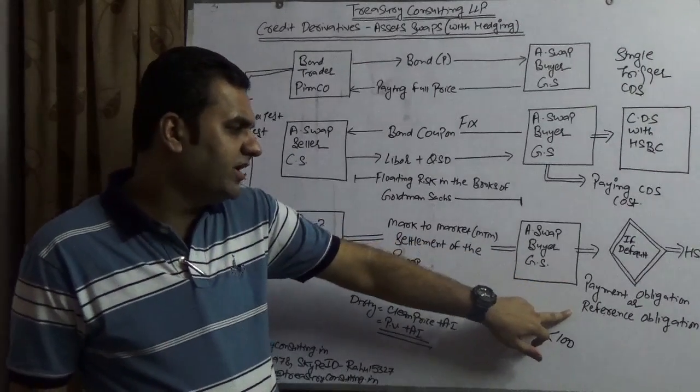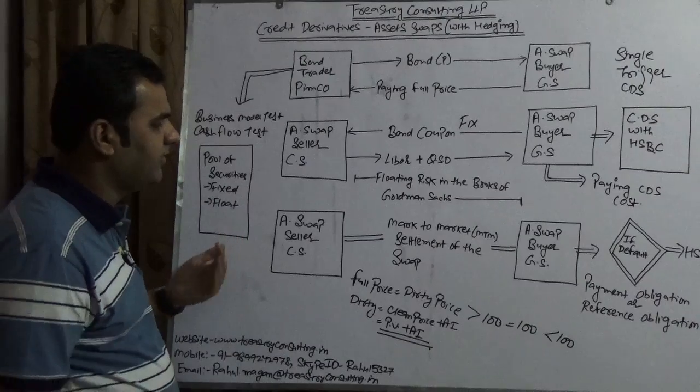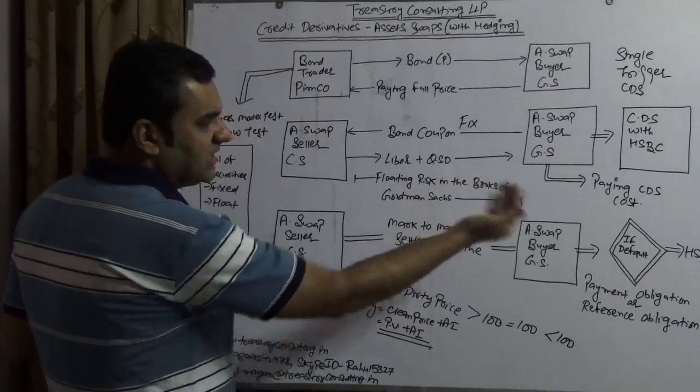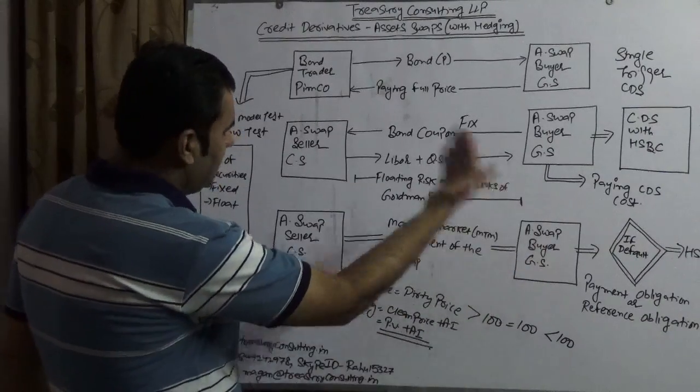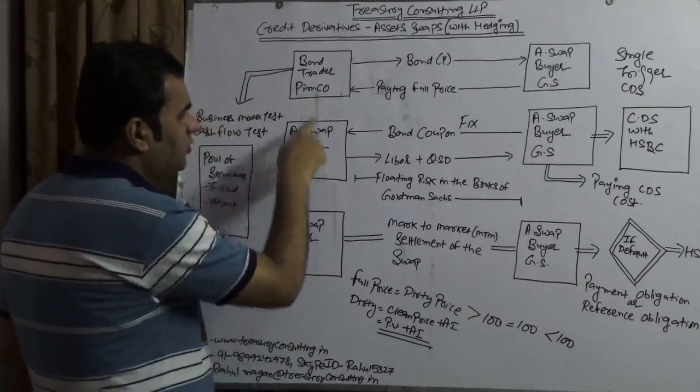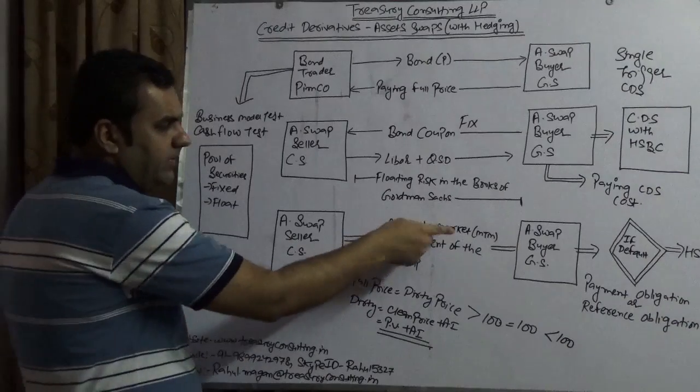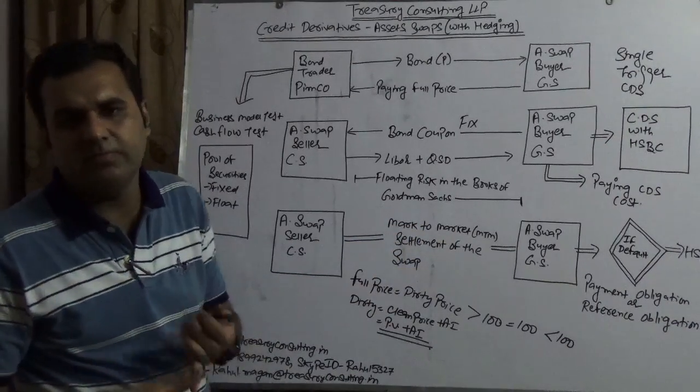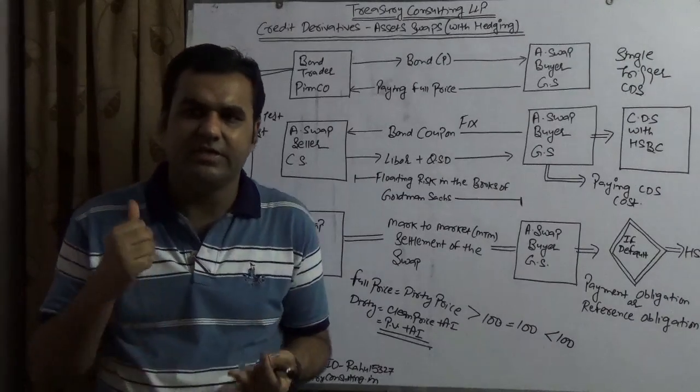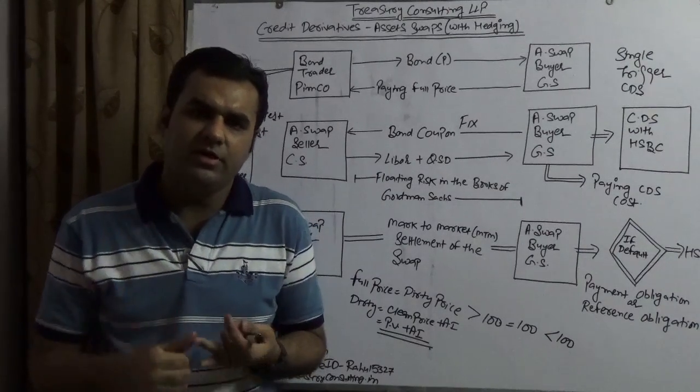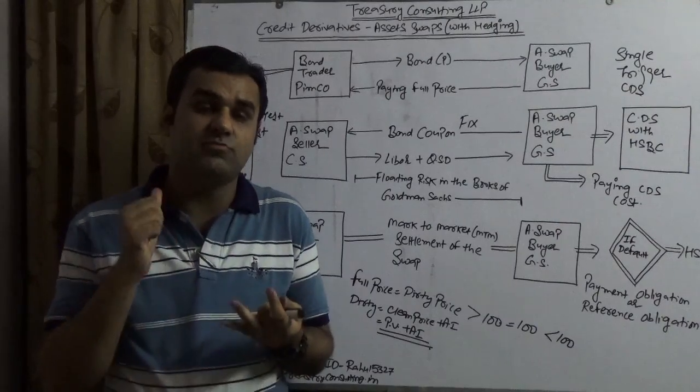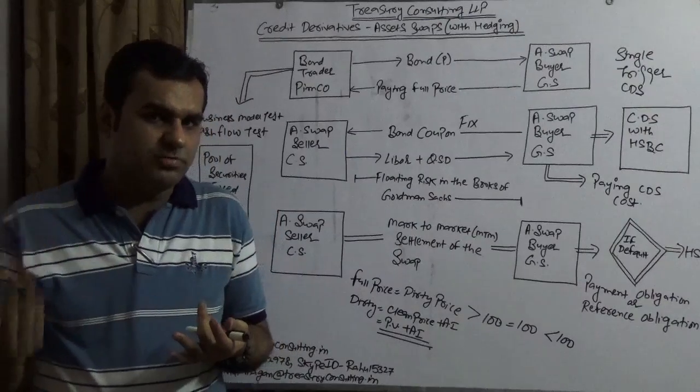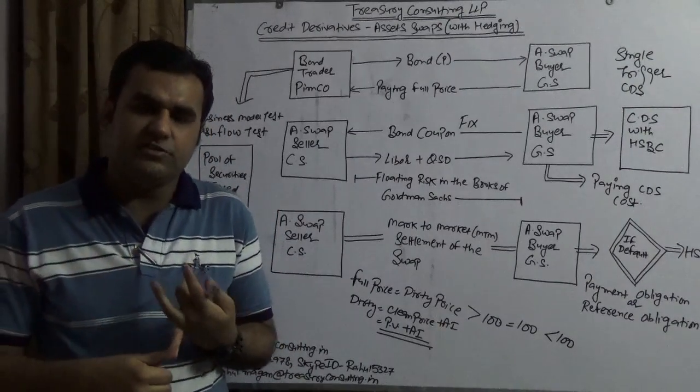Based upon the contract, it could be payment obligation or reference obligation. Goldman Sachs will cancel this because now there is no coupon they are getting. Goldman Sachs will cancel this with Credit Suisse, who is an asset swap seller, and that would be mark-to-market settlement. Again the issue will come whether this mark-to-market settlement is L1 (level 1, which is 100% observable), level 2 (which is at least 99%, at least 1% non-observable), or L3 which is also known as mark-to-model but which is 100% non-observable.